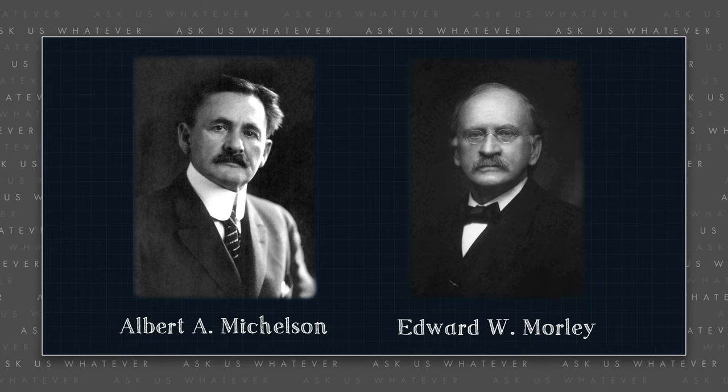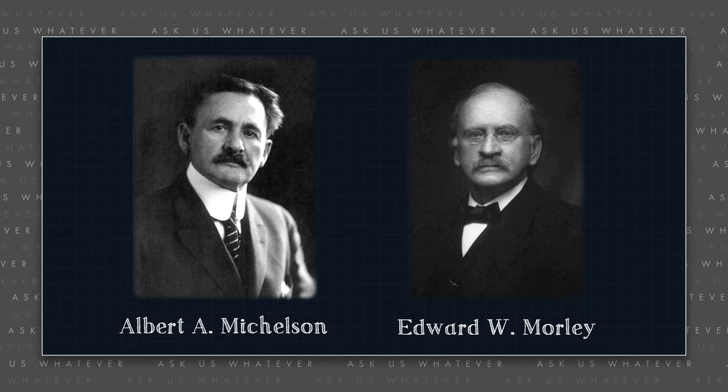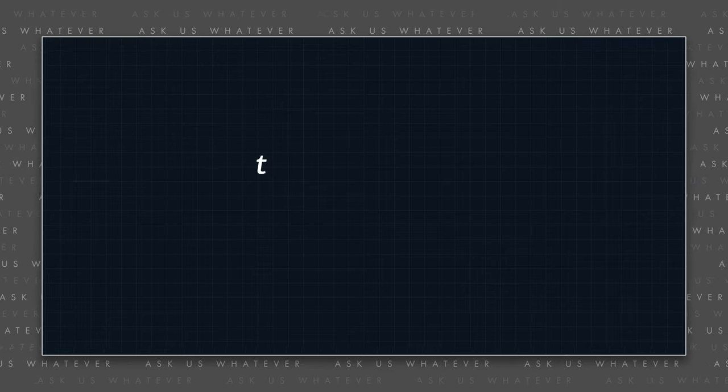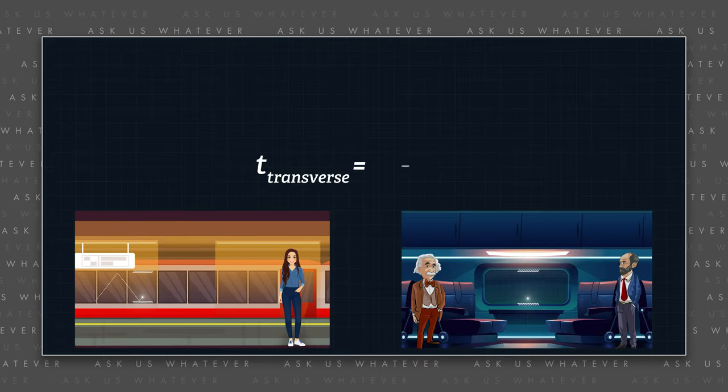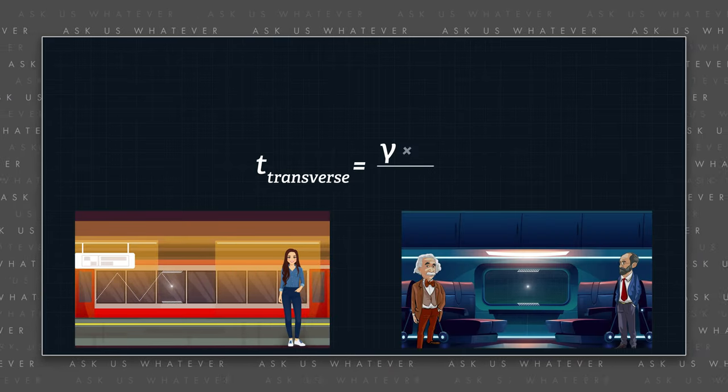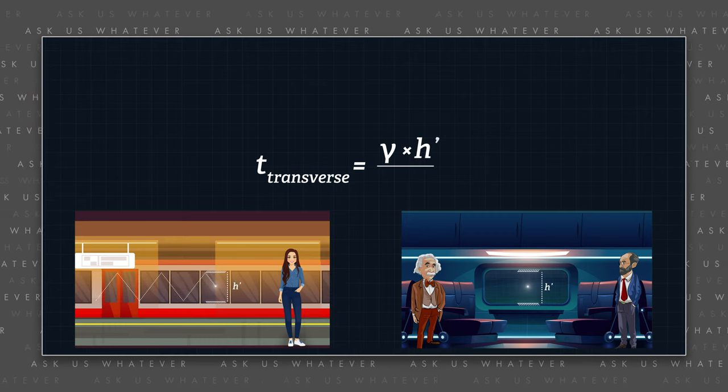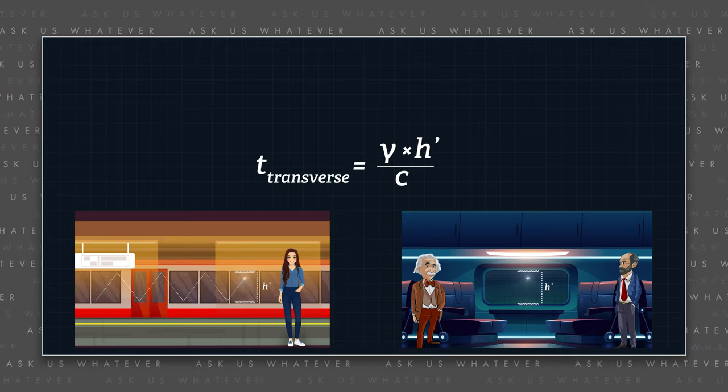The most famous experiment of this time was conducted by two scientists, Michelson and Morley. They reasoned that light should require more time to move in the direction of the Earth's motion as compared to moving in a direction perpendicular or transverse to the direction of Earth's motion. To understand what they expected, we need to do some math. Using the reasoning from the prior episode, the time required for light to travel transverse to the direction of motion is the Lorentz gamma factor times the transverse distance — which we called h' in the last episode — divided by light speed c.